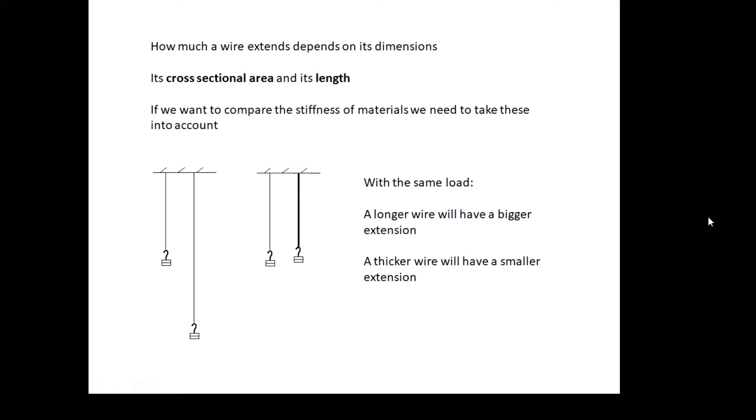If we want to compare materials, then we need to take this into account. You don't talk about the stiffness of copper; you talk about something called the Young's modulus of copper. You need a material property. With the same load, a longer wire will have a bigger extension; a thicker wire will have a smaller extension.